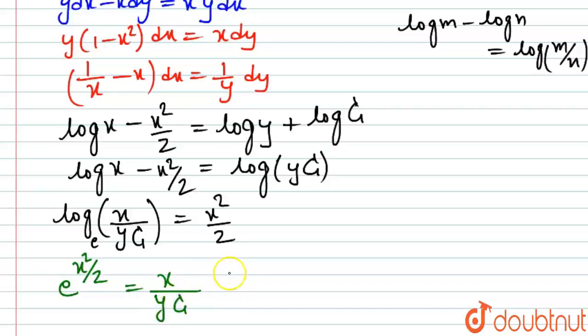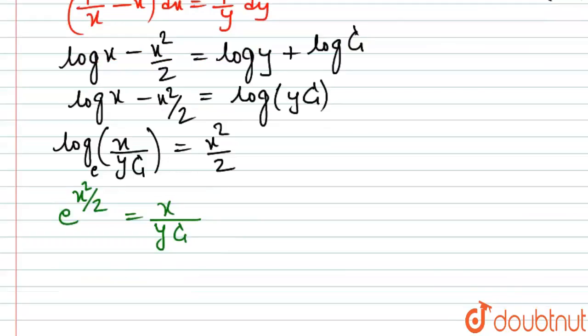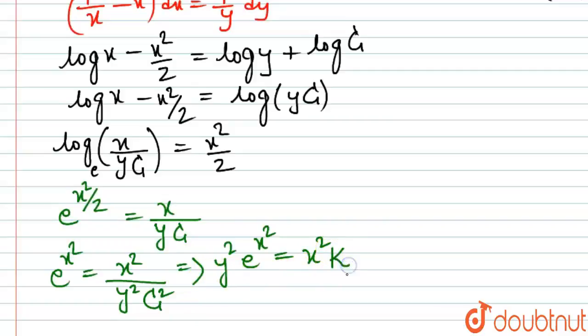Just squaring this relation, this becomes e power x square, that is equal to x square upon y square times c square. Which is nothing but y square times e power x square, that is equal to x square. 1 by c square is another constant, so we can just write it as a constant k. This is the final solution.